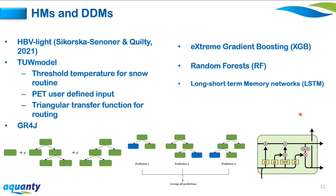Finally, Long Short-Term Memory networks (LSTM) are deep learning models based on recurrent neural networks. The strength of the LSTM is its ability to learn long-term dependencies, which is especially useful since persistence is commonly found in hydrological variables. The LSTM learns these dependencies through a cell state and multiple gates that control the flow of information. LSTM was chosen for its prominence in recent deep learning hydrological simulation applications.